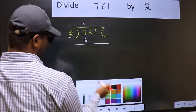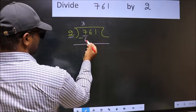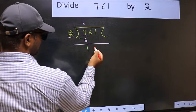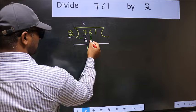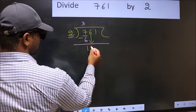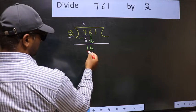Now, you should subtract. 7 minus 6 is 1. After this, you should bring down the beside number. So, 6 down. Now, 16.